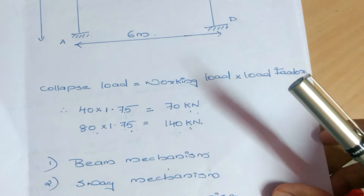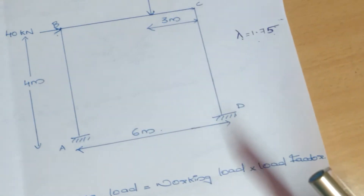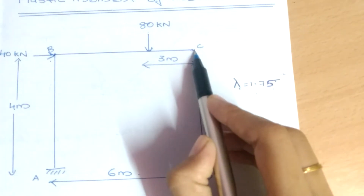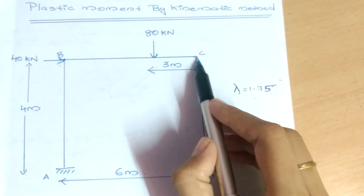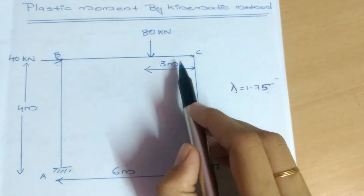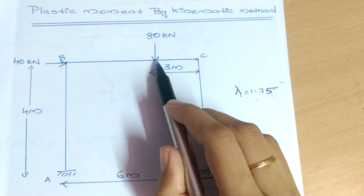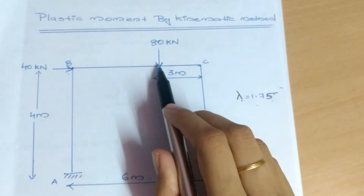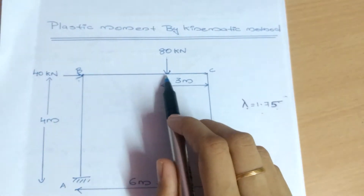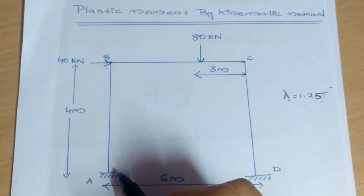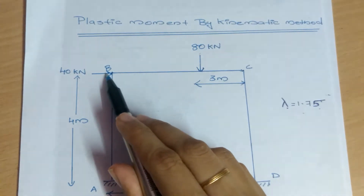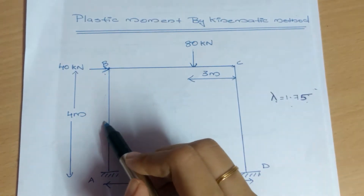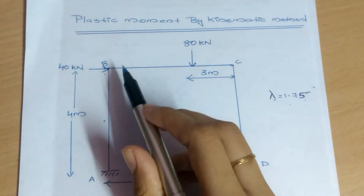First, we check how the beam mechanism occurs. During the beam mechanism, we only consider members B and C, since this portion acts like a beam and the force acts at the center point — that is, at 3 meters. We do not consider member AB. The reason is that the force is acting at the junction. If it were acting at the midpoint of AB, say at 2 meters, we would consider AB as another beam.